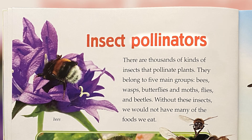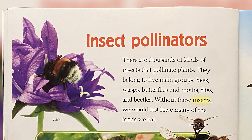Insect pollinators: There are thousands of kinds of insects that pollinate plants. They belong to five main groups: bees, wasps, butterflies and moths, flies, and beetles. Without these insects, we would not have many of the foods we eat.